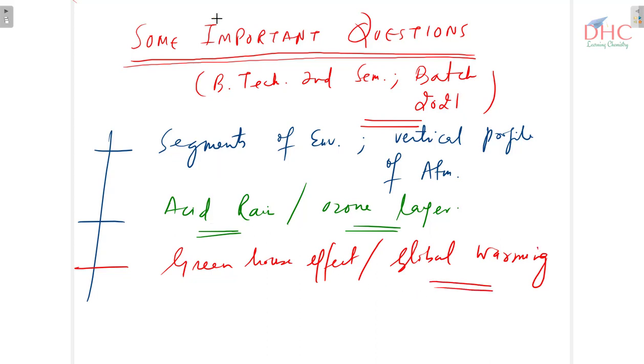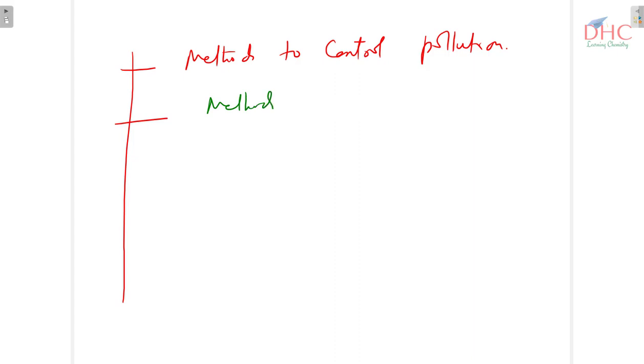Greenhouse effect or global warming, the third topic to focus on to study good. Then there are methods to control - what are the methods used to control pollution? Then we have methods to remove hardness, methods to remove hardness of water.